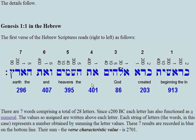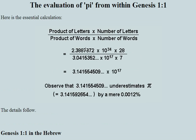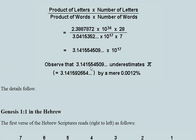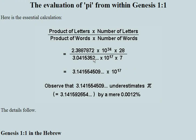Each Hebrew letter has a specific value — for example, this letter has a value of 90 and this one has a value of 200. We multiply all those numbers together. There are 28 letters, so that's how we arrive at the product of the letters multiplied by the number of letters. Then, adding up each word's letter values — 90 + 200 + 1 + 5 = 296, 400 + 1 + 6 = 407 — we do that for each word and multiply those word values together: 296 × 407 × 395. There are seven words in that verse, and that's how we get the denominator.